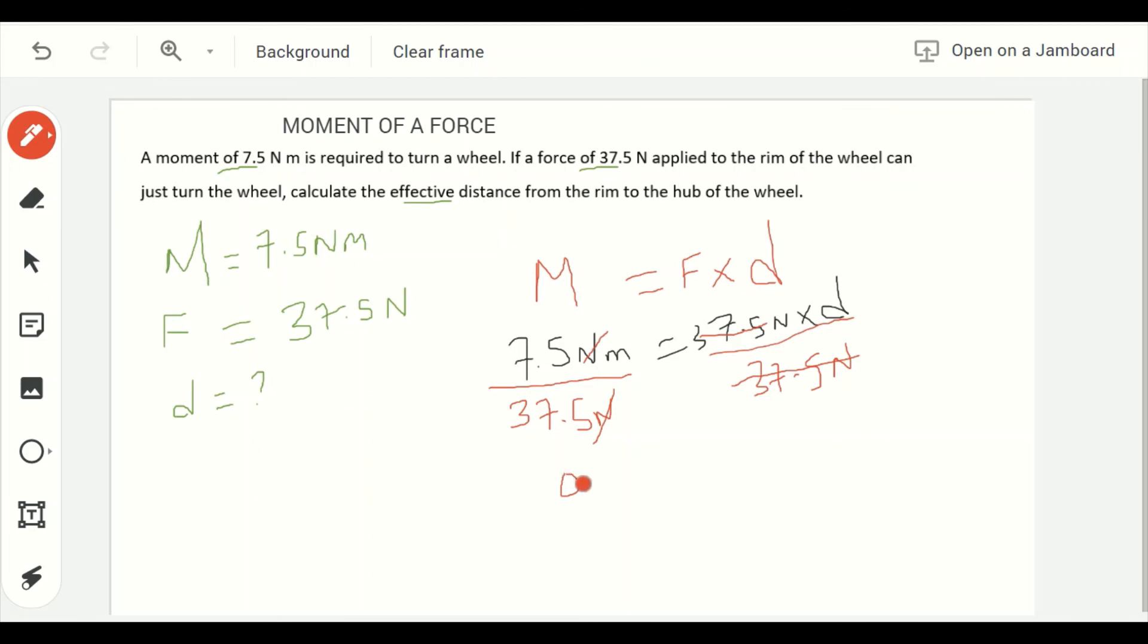That is 0.2 meters equal to my distance. So my effective distance from the rim to the hub of the wheel is 0.2 meters.